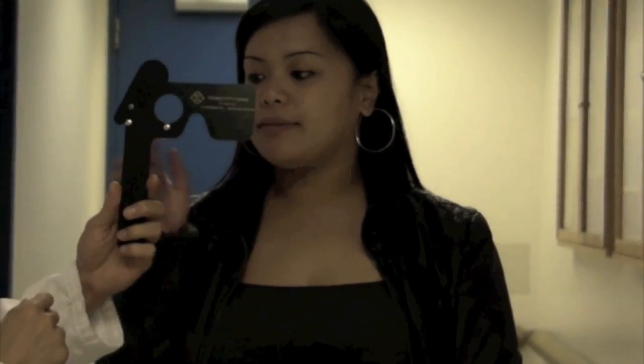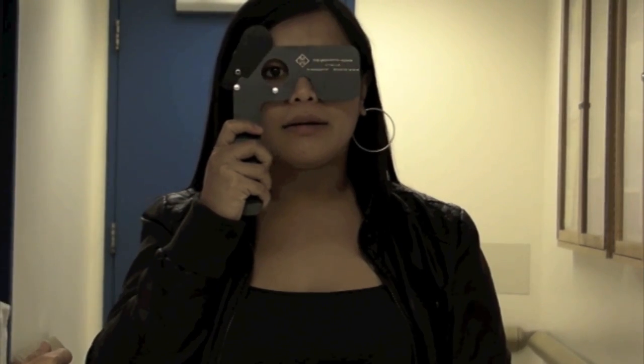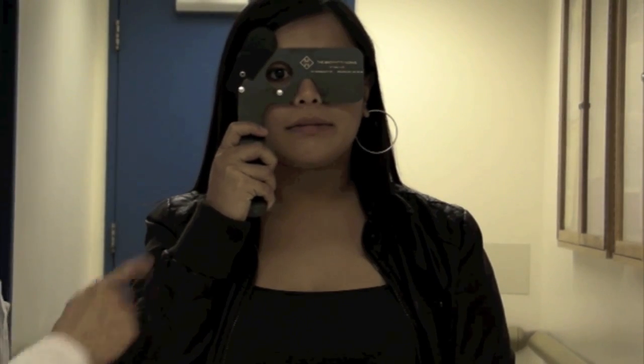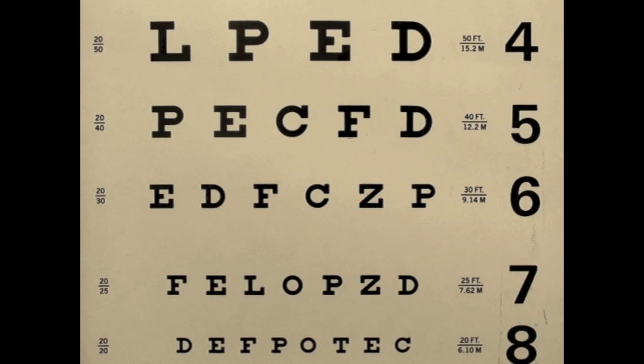Have the patient read the smallest row of letters that can be easily read. Encourage the patient to read as many of the letters of the next smaller line, and take note of the smallest row of letters that the patient can completely read and the corresponding visual acuity measurement.